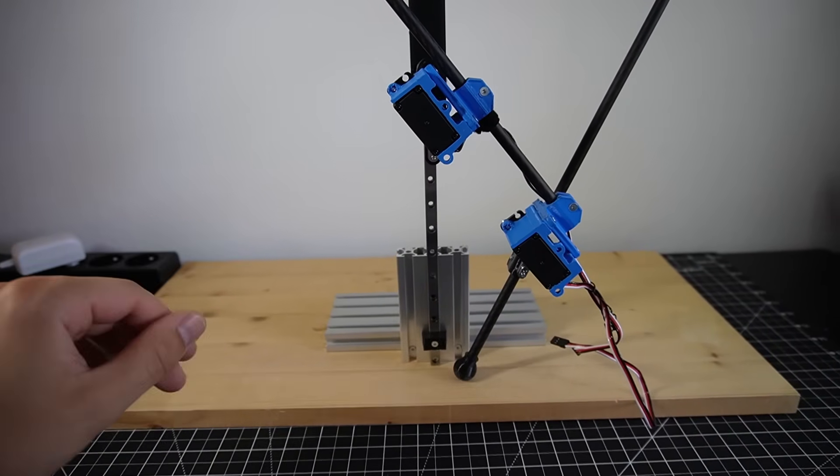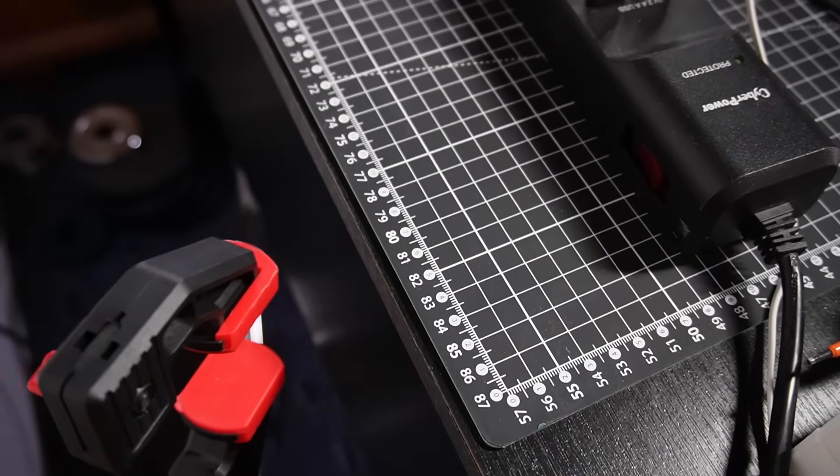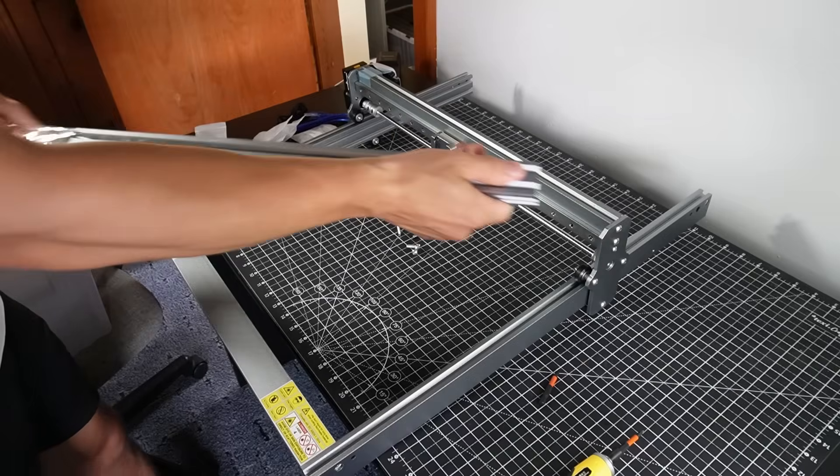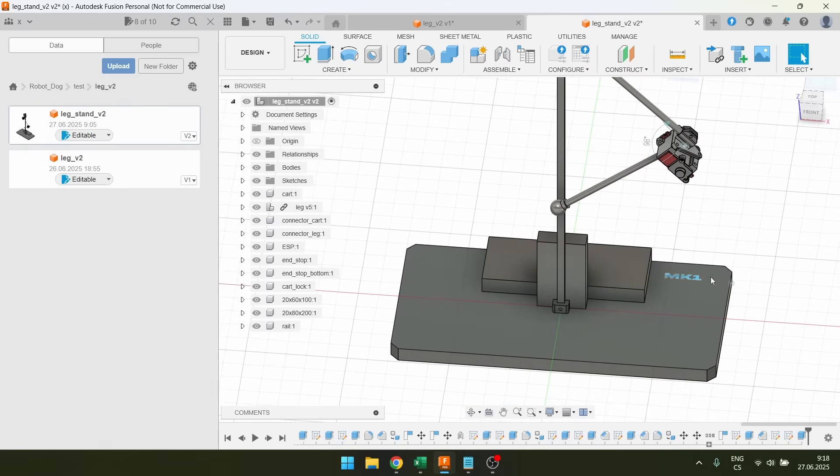First I needed to change the test stand. My table has a piece of wood at the back so I wasn't able to clamp the test stand to it. Since my laser CNC cutter just arrived, I decided I'm gonna make a wooden base plate and attach the test stand to it.